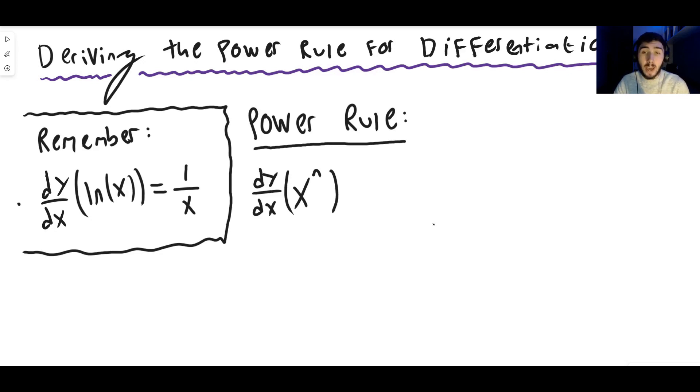So you can't say n equals x, you can't do x to the x with this, you can't do x to the cos x, it has to just be a number. But this is what you do and that is equal to n times x to the n minus one. And that's the power rule.